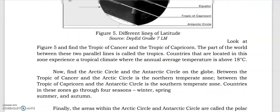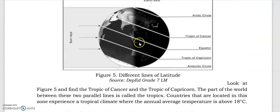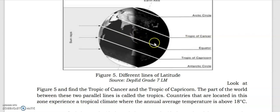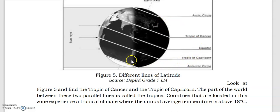As mentioned, the closer the place is to the equator, the warmer the climate. The Philippines is located near the equator, so we experience the dry and wet seasons. Unlike countries in between the Tropic of Cancer and the Arctic Circle, and similarly between the Tropic of Capricorn and the Antarctic Circle, which experience the four seasons.